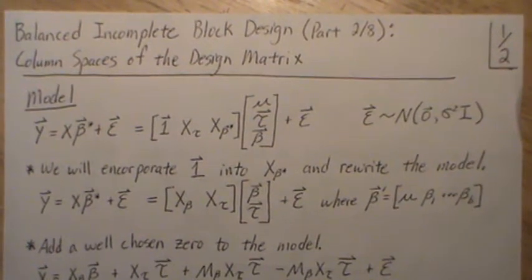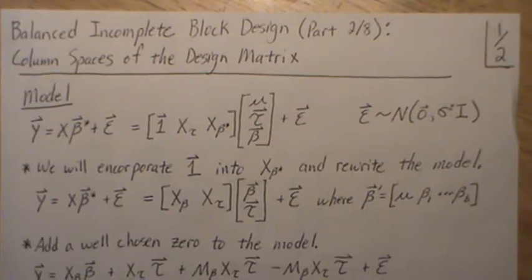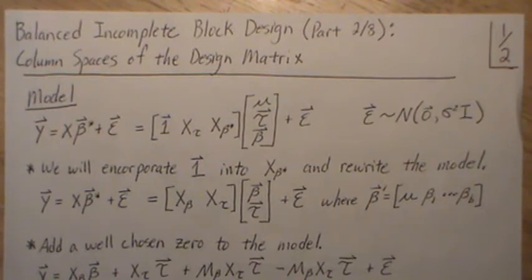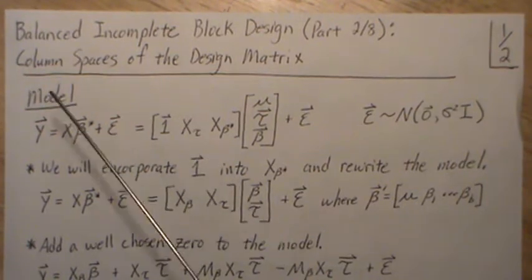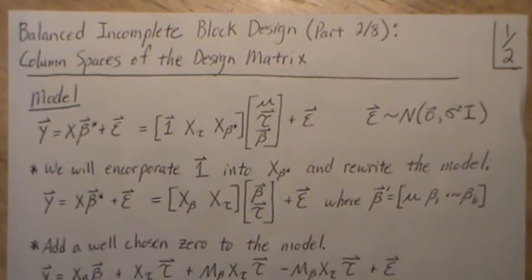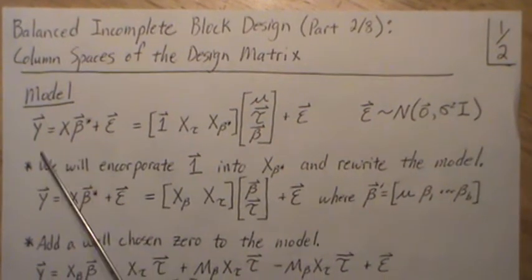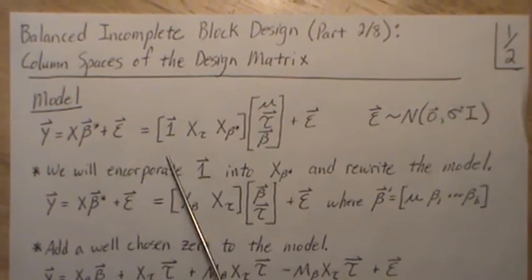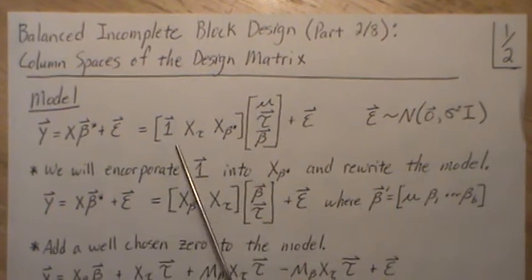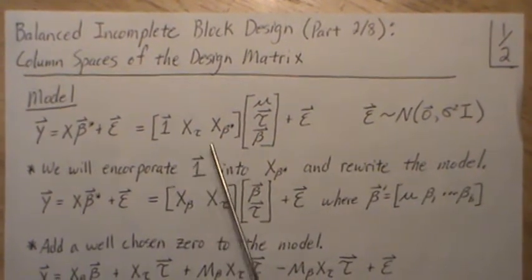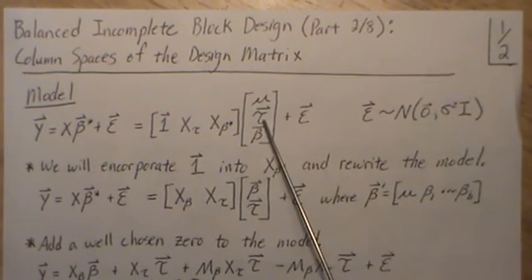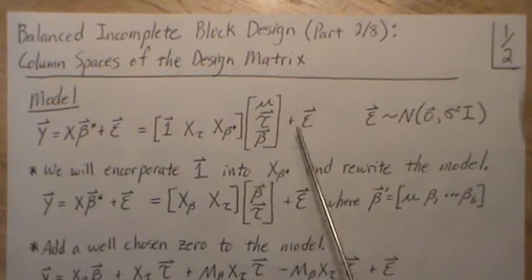Hello, this is the next video in a playlist called General Linear Models Design of Experiments. This is part two of a mini-series on balanced incomplete block designs, and the topic for this video is the column spaces of the design matrix. As a reminder, the model we're working with is y = Xβ + ε, partitioned into the treatment effect, the block effect, and a column of ones for mu, so τ₁ through τ_a, β₁ through β_B.